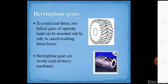To avoid axial thrust, two helical gears of the opposite hand can be mounted side by side to cancel resulting thrusting forces. Herringbone gears are mostly used in heavy machineries. Helical gears combine with one another, so herringbone gears are used.